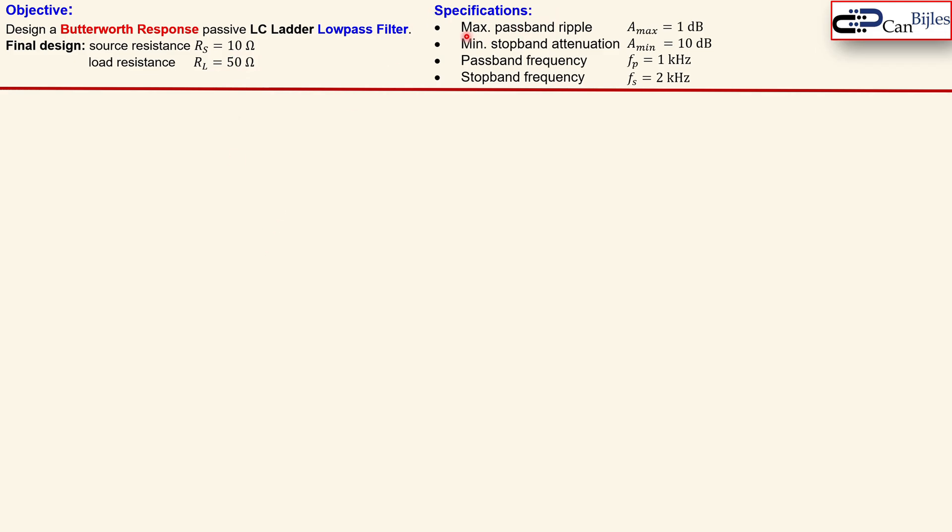The specifications in this case are maximum passband ripple of 1 dB, minimum stopband attenuation of 10 dB, and a passband frequency of 1 kilohertz and a stopband frequency of 2 kilohertz. So how do we solve this design problem?